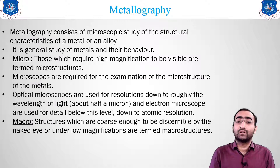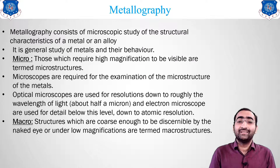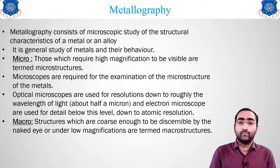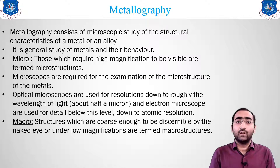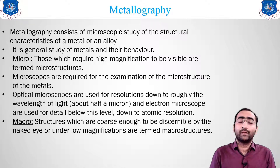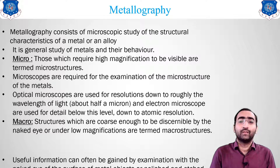The second type is the macro structure. The structure which can be easily seen by our naked eyes is known as macro examination. The surface or materials viewed at low magnification — up to a magnifying lens — are termed as macro examination.